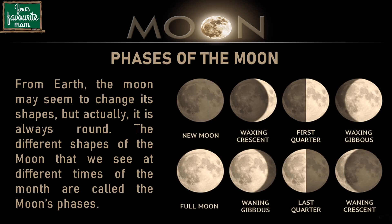If you have looked into the night sky, you may have noticed the moon appears to change shape each night. Some nights the moon might look like a semicircle or a bright complete circle, and on other nights you might not be able to see the moon at all. The different shapes of the moon that we see at different times of the month are called the moon's phases. The shape of our moon isn't actually changing throughout the month; however, our view of the moon does change.